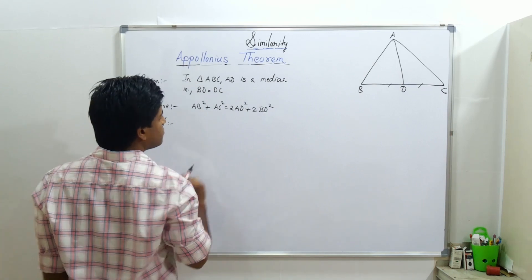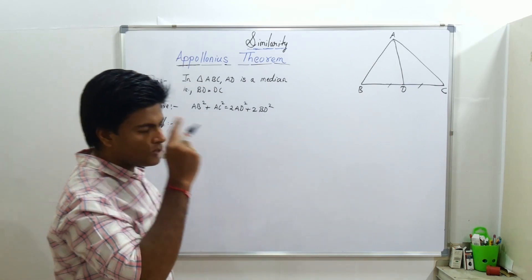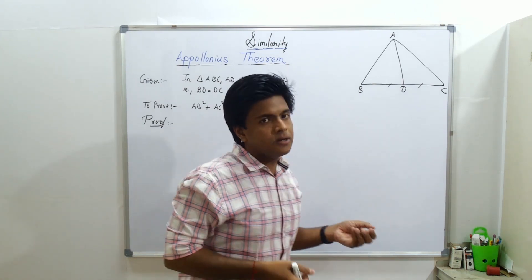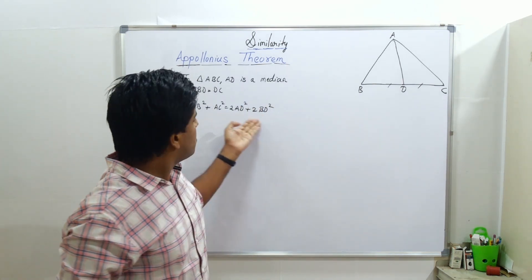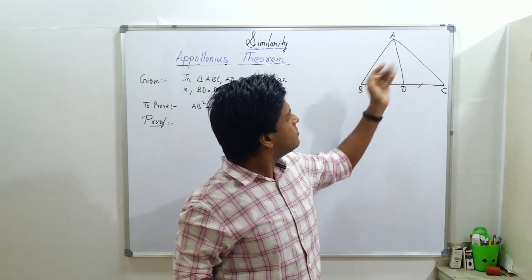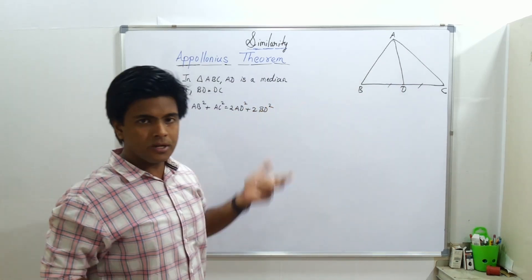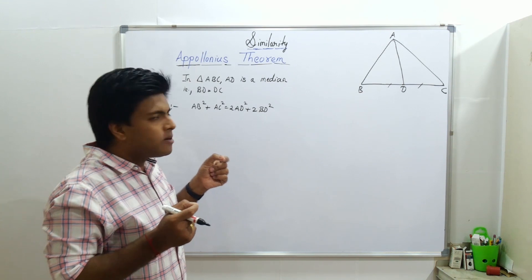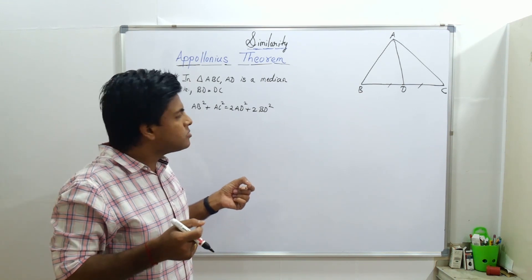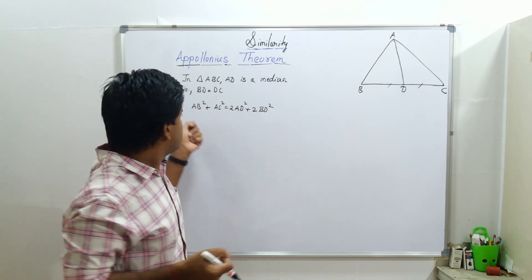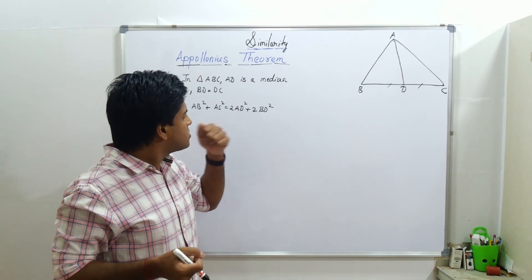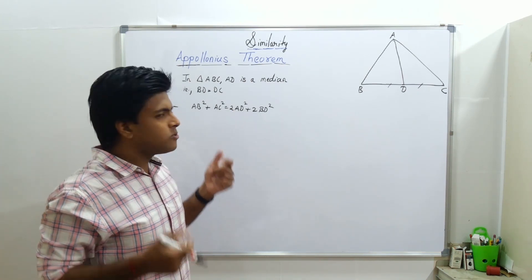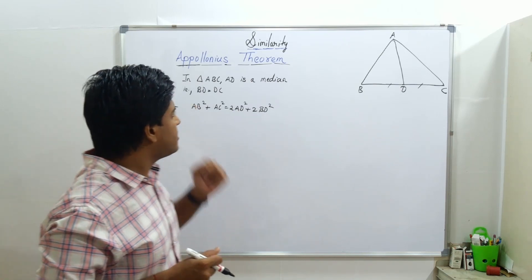So we will start the proof. But before that, we will need to think a bit about how we will proceed. There are square terms involved, there are sides involved. So how will we proceed? One thing that comes to my mind is that I should use Pythagoras, because everything is in a square, so there is a possibility of applying the Pythagoras theorem. How do I identify it? I need to identify AB square and AC square.